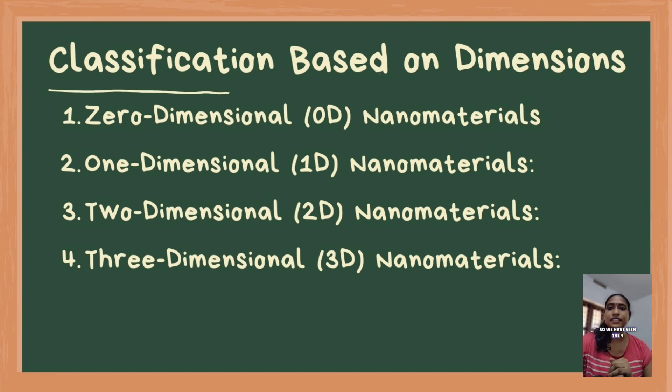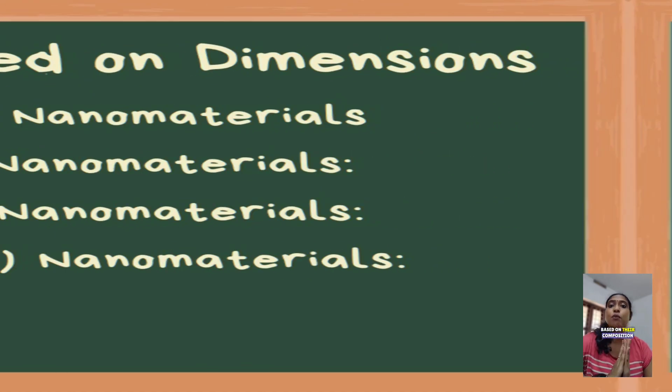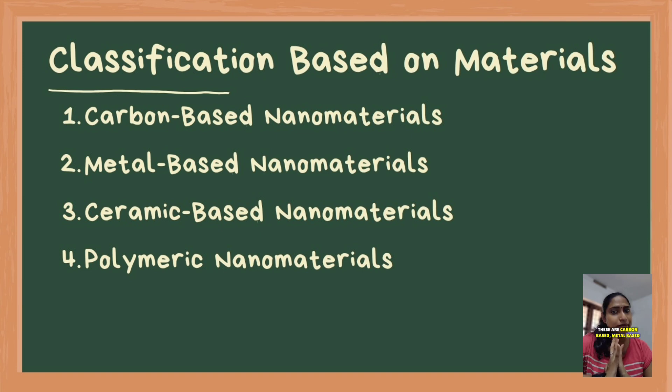So, we have seen the four classifications: zero-dimensional (0D), one-dimensional (1D), two-dimensional (2D), and three-dimensional (3D) based on dimensions. Additionally, nanomaterials can be classified based on their composition. These are carbon-based, metal-based, ceramic-based, and polymeric nanomaterials.